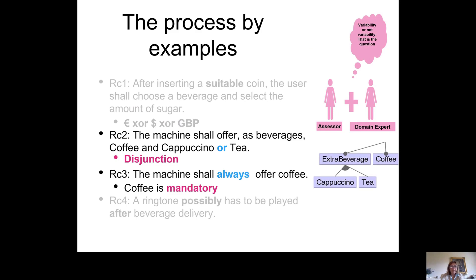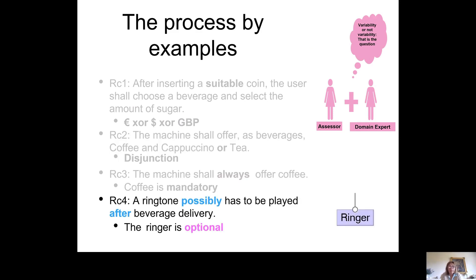Finally, the fourth requirement has two ambiguities. 'Possibly' and 'after' — 'after' is an actual ambiguity because we have to specify how long after beverage delivery the ringtone is played. We do not want to produce machines with different time intervals, but we do want to produce machines with and without the ringtone, making the ringtone an optional feature.